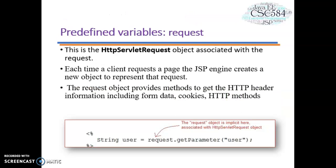Let's start with Request. The Request object is an instance of javax.servlet.http.HttpServletRequest. Each time a client requests a page, the JSP engine creates a new object to represent that request. The Request object provides methods to get HTTP header information, including form data, cookies, and HTTP methods.